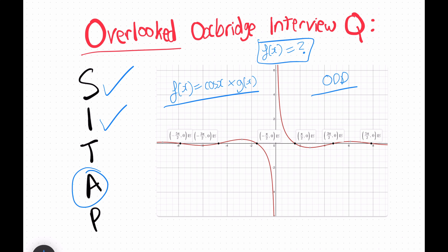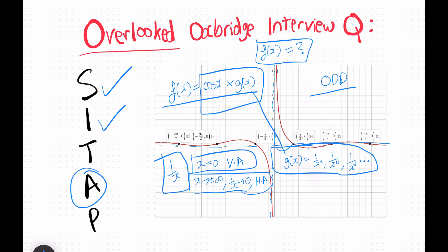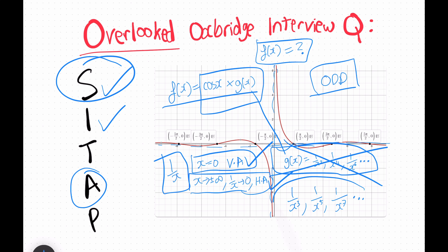Turning points won't help here since we don't have values for the stationary points. Moving to asymptotes, there's a vertical asymptote at x equals 0 and a horizontal asymptote at y equals 0. We need a function that, multiplied by cosine, gives both of these. Choosing 1 over x works: at x equals 0 there's a vertical asymptote, and as x goes to plus or minus infinity, 1 over x goes to 0. Note it can't be even powers like 1/x² because we established the function is odd.